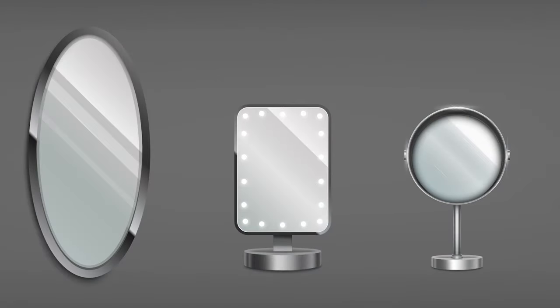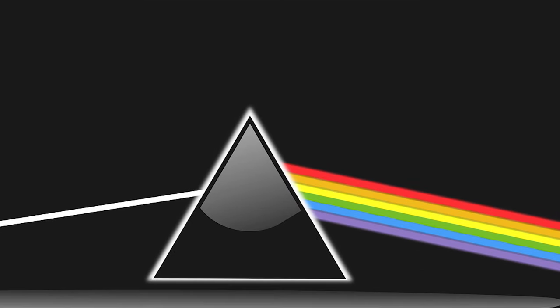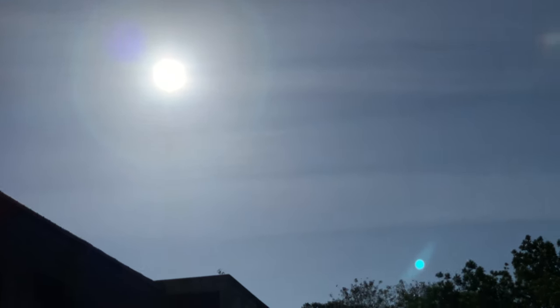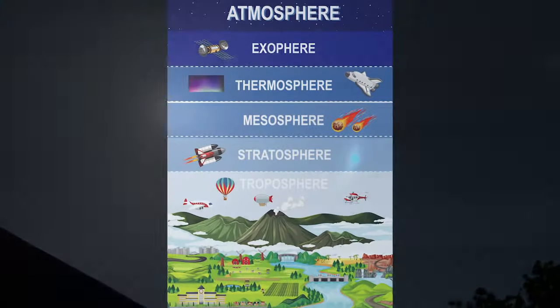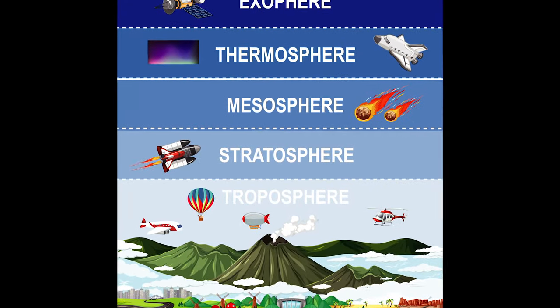Ice crystals act as mirrors and prisms. That is the mechanism behind the occurrence of the solar halo. Ice crystals are found in between 5 to 10 kilometers from the Earth's surface, in the troposphere layer.